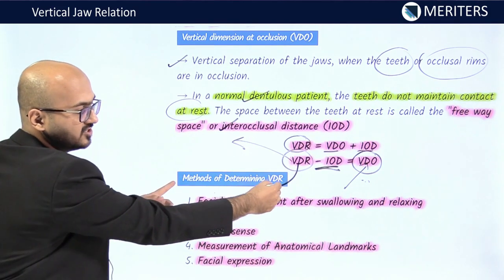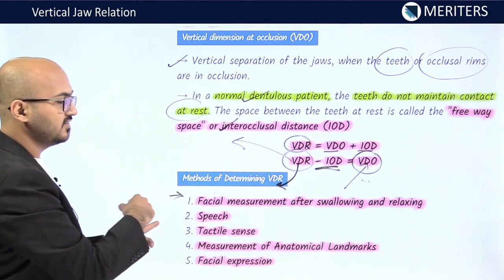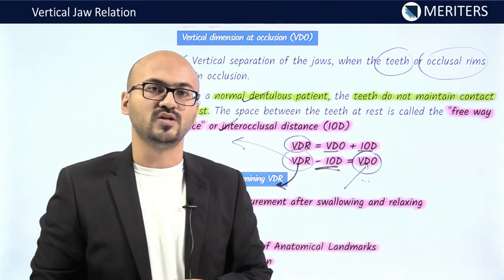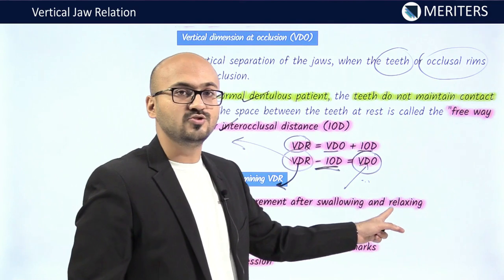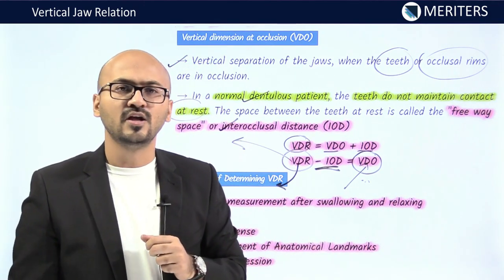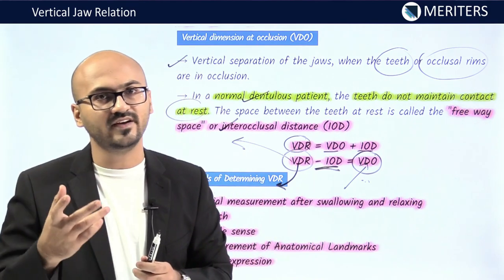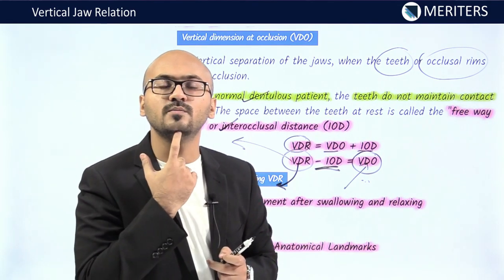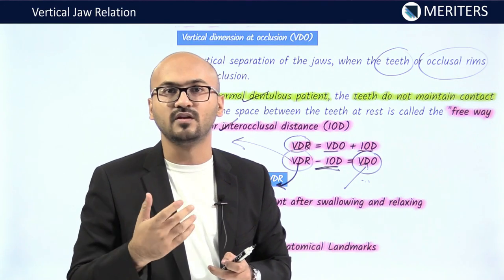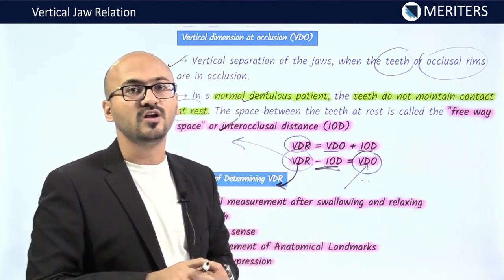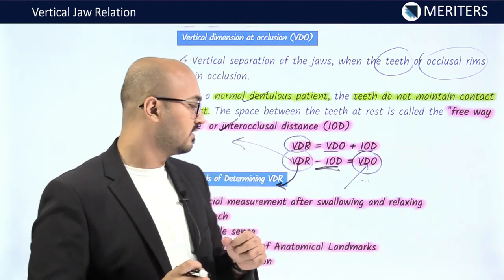What are the methods of determining vertical dimension at rest? First is facial measurements after swallowing and relaxing. Once you swallow, your teeth are not in contact — you are at rest. Choose any two stable landmarks on your face and measure with a scale, calipers, or dividers. Preferably use the tip of the nose and the highest point on the chin, as these are the most prominent and easiest to record. If the patient has a beard, put a sticker on it and use that marking.